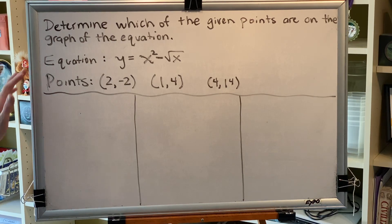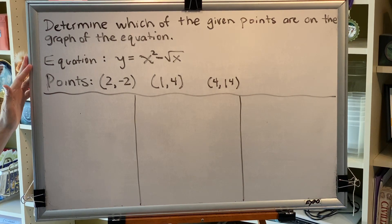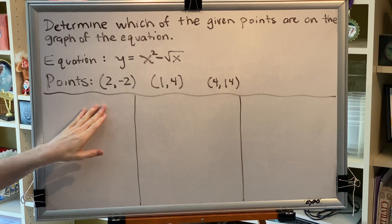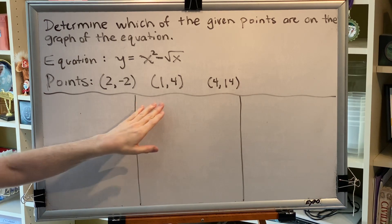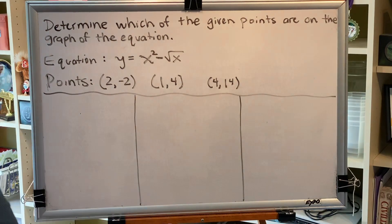Problem 1. The equation is y equals x squared minus the principal square root of x. The points for consideration are (2, -2), (1, 4), and (4, 14).